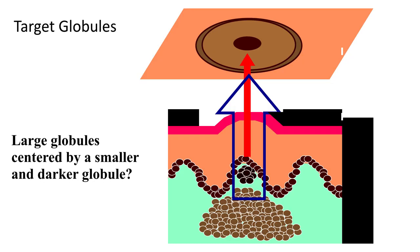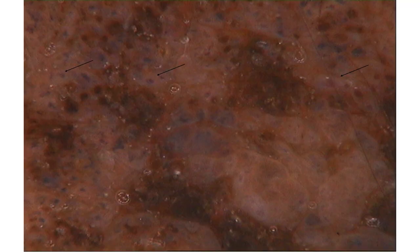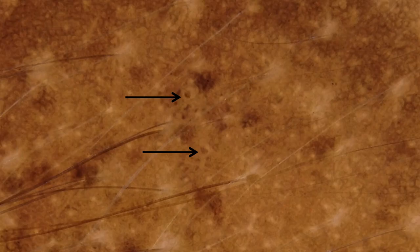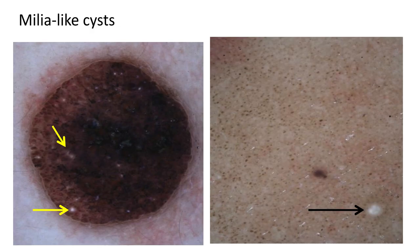Target globules are not universally accepted structures, but have been proposed to suggest that a lesion is congenital in origin. They are described as larger globules centered by a smaller, darker globule. As indicated by the arrows, you see a brownish globule surrounded by a hypopigmented, brownish, larger, roundish structure — a target globule. Another example shows brown globules surrounded by a hypopigmented, brownish, larger, roundish structure.